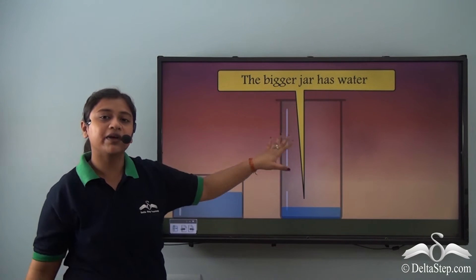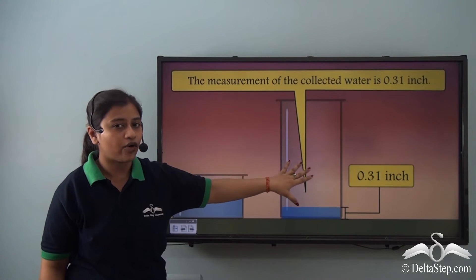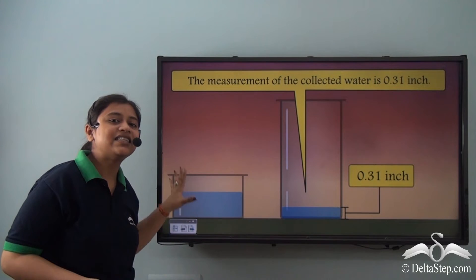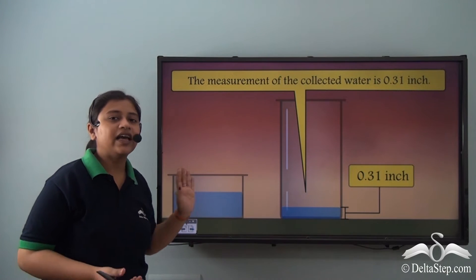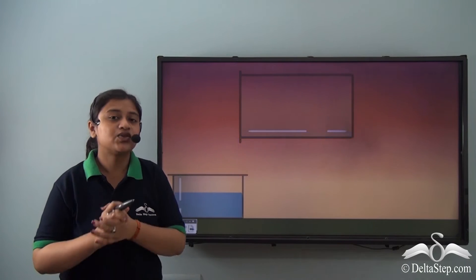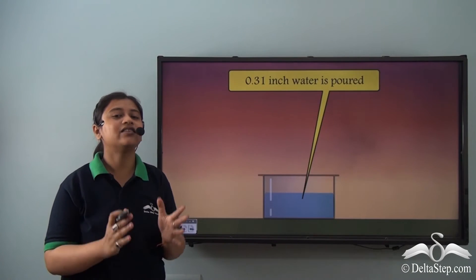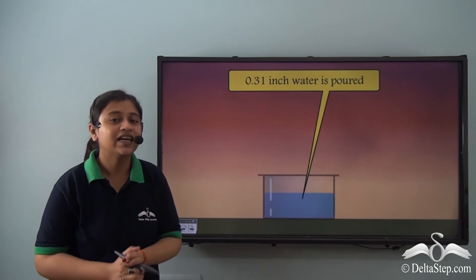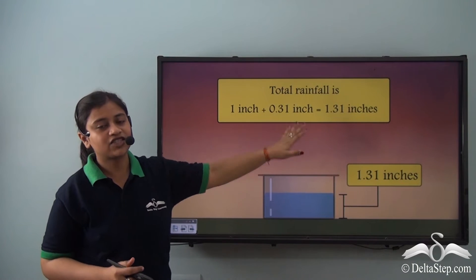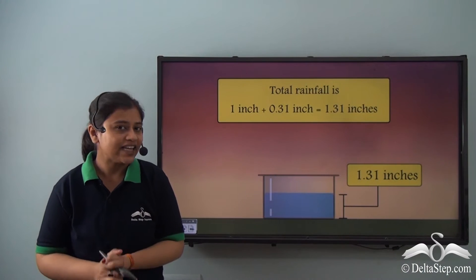The water in the bigger jar is also poured and measured into the same jar — it comes up to 0.31 inches. So when all the water together is measured, it comes to one inch plus 0.31 inch, that is 1.31 inches.